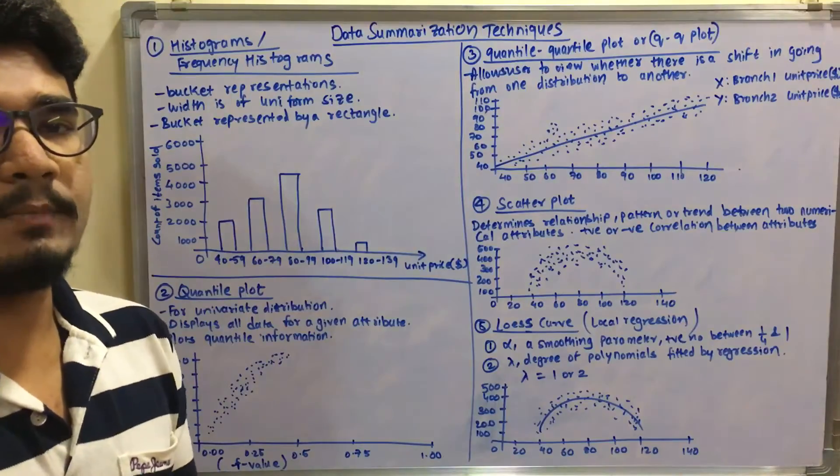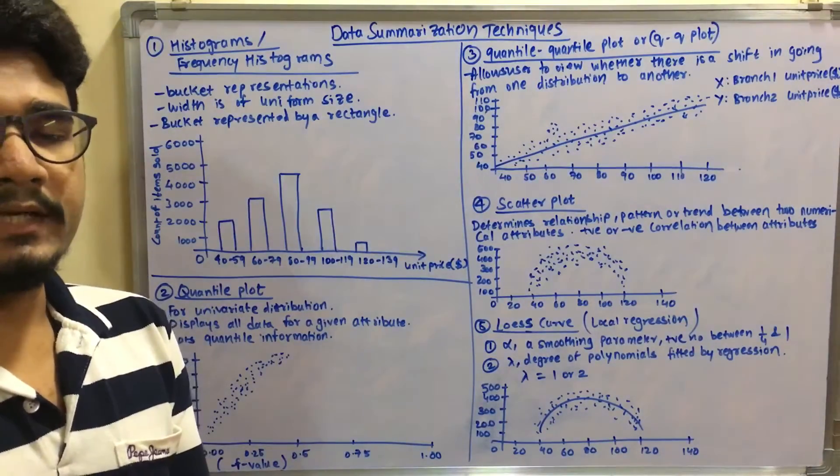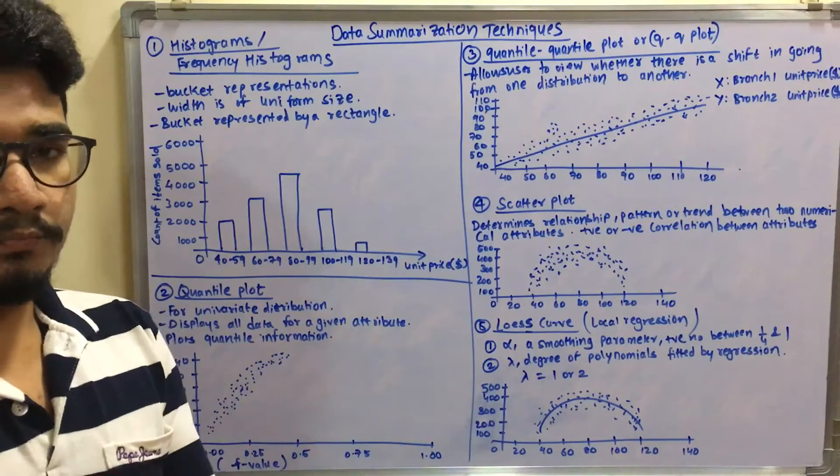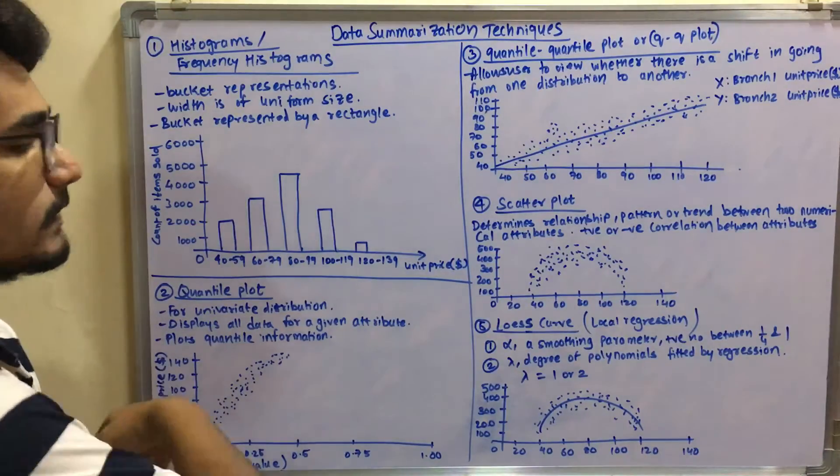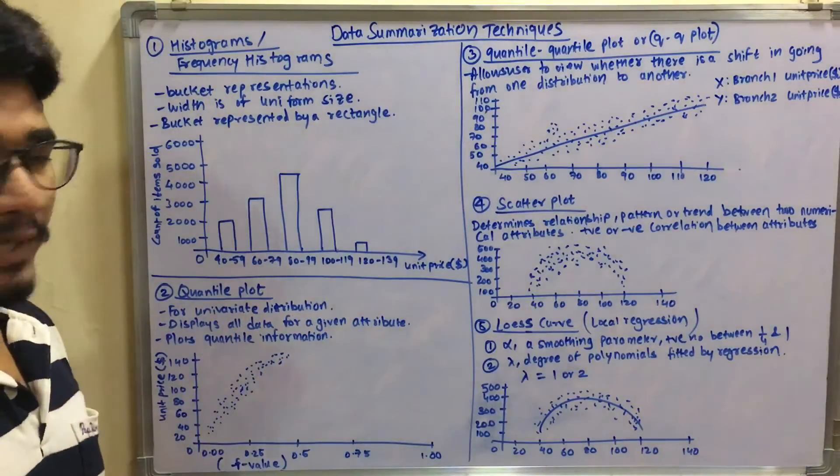For example, say a candidate column is given - candidates' first name, last name, mobile number, sex, age, email ID and all those things. So for all those particular single attributes, it displays all the data which it has and plots a quantile information.